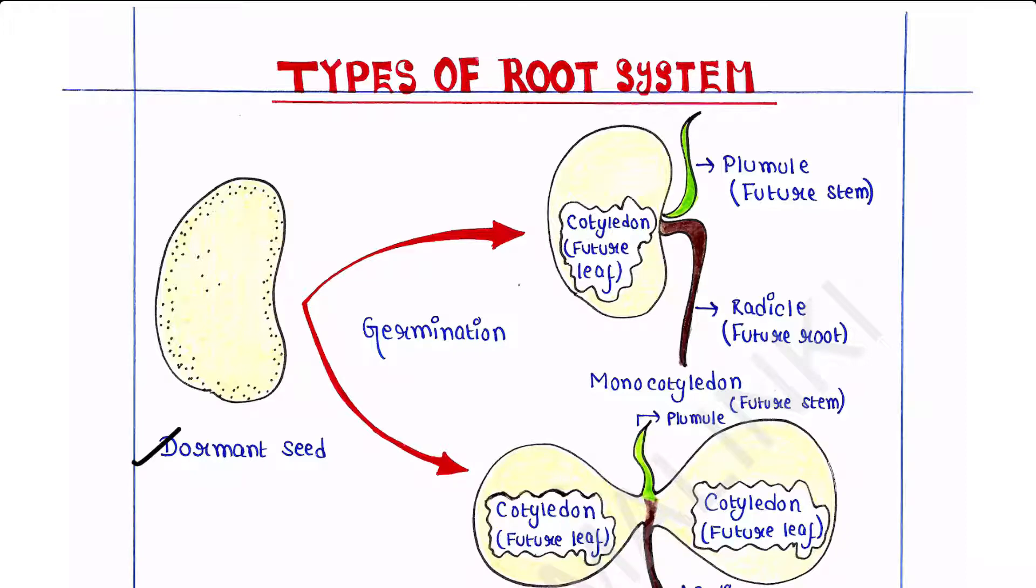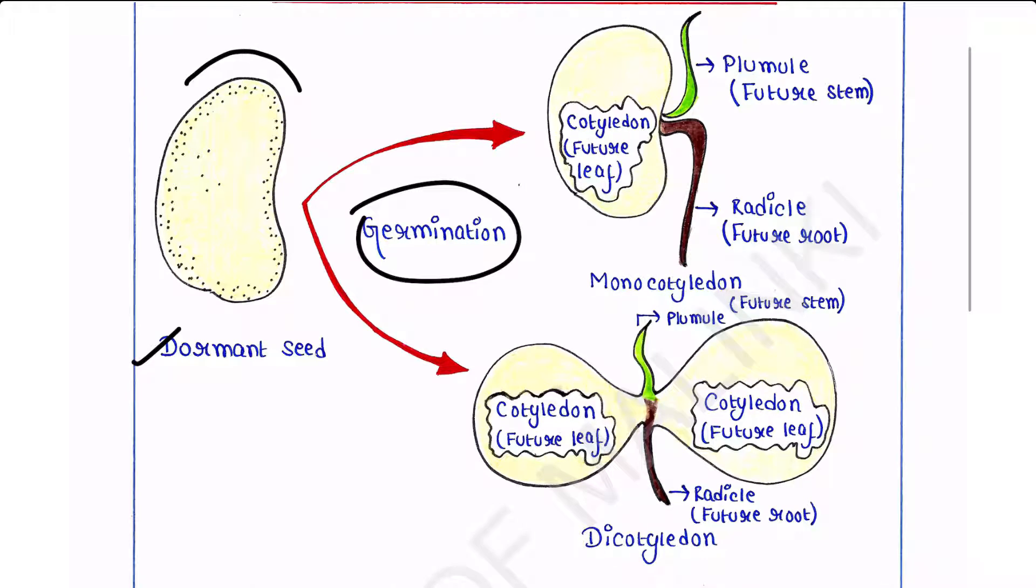Suppose this is a dormant seed, that means it is yet to be germinated. Now the seed gets its proper environmental factors like water and undergoes germination. When a seed germinates, the plant is just in its embryonic state. In this tiny embryo, this is the radicle. Radicle is the first organ that appears.